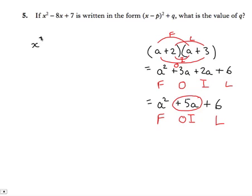So x squared minus 8x plus 7 has to be written as some expression. x minus something, x minus something, where both of these brackets are identical. So let's try and tackle that.